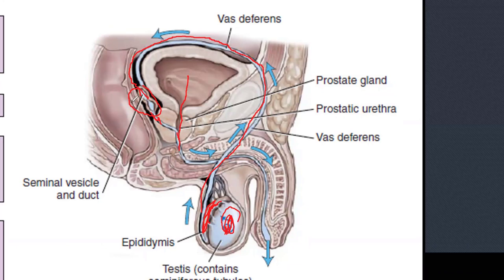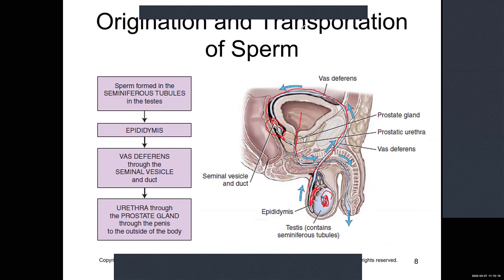The flow continues out of the prostate gland into the urethra through a separate channel, and then gets pumped out through the penis to inseminate the female. The male reproductive system is fairly basic — the main structures are the testicle, epididymis, vas deferens, seminal vesicle, prostate, urethra, and penis. There's not a large amount of terminology compared to some other systems.